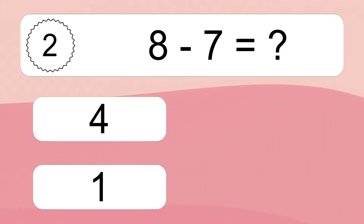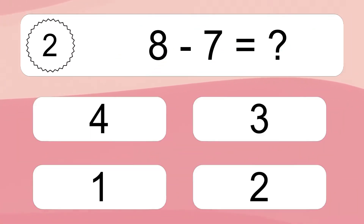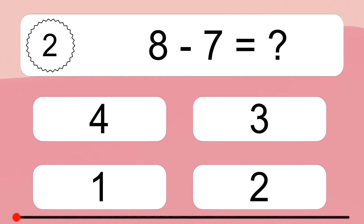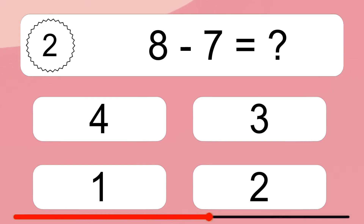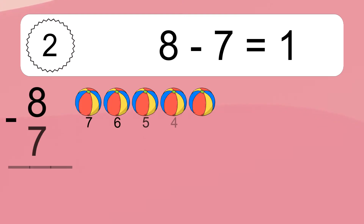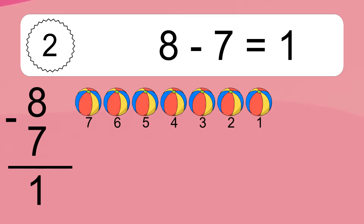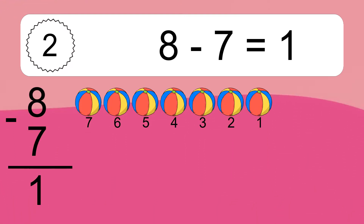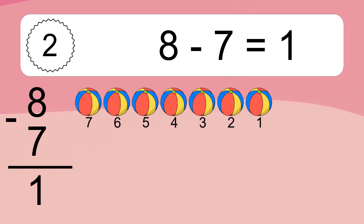8 minus 7 equals what? 8 minus 7 equals 1. Let's count it: 7, 6, 5, 4, 3, 2, 1.